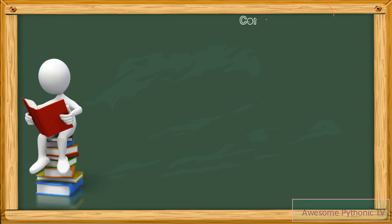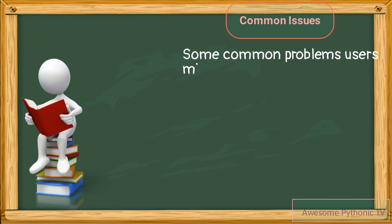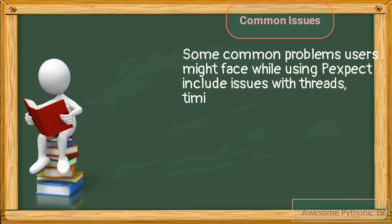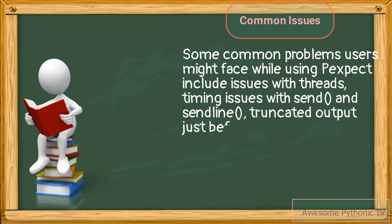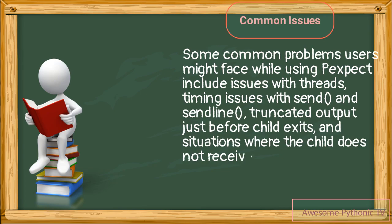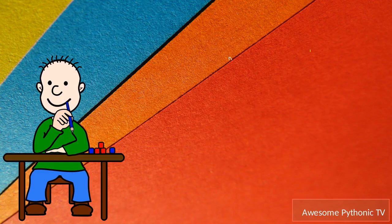What are some common problems that users might face while using Pexpect? Some common problems include issues with threads, timing issues with send and sendline, truncated output just before child exits, and situations where the child does not receive full input and emits EOF.